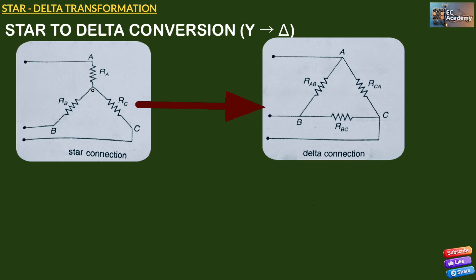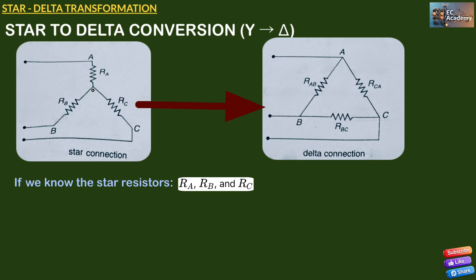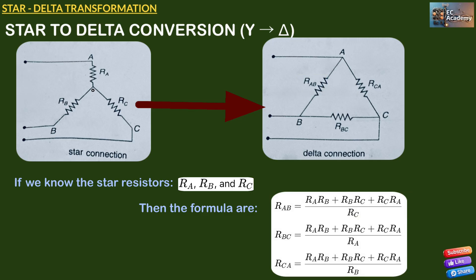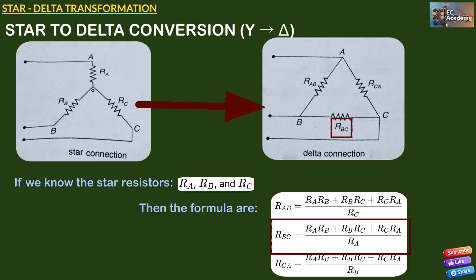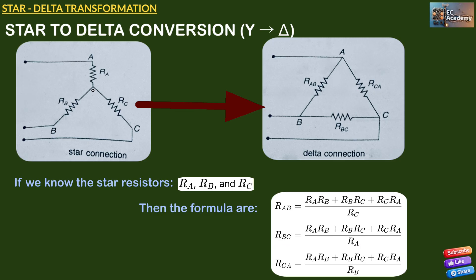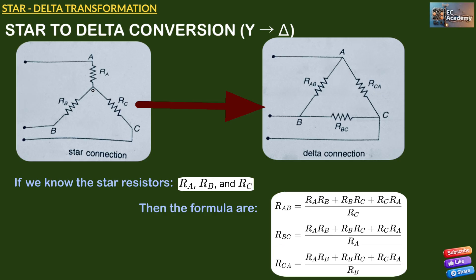Now let us understand the star to delta conversion. If we have star resistors RA, RB, and RC and we want the delta conversion, the formulas are: RAB equals (RA·RB + RB·RC + RC·RA) divided by RC; RBC equals (RA·RB + RB·RC + RC·RA) divided by RA; and RCA equals (RA·RB + RB·RC + RC·RA) divided by RB. Each delta resistor equals the sum of the products of all pairs of resistors divided by the opposite star resistor.